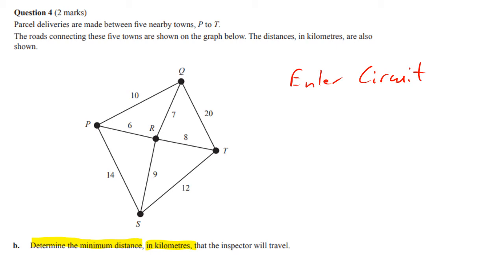The odd vertices are the four outside ones, so we're not going to repeat the edges involving 6, 7, 8, or 9. We'll repeat the edge of 10, and since P and Q give us 4, we have to join S and T as well, which coincidentally also has a lower value of 12.